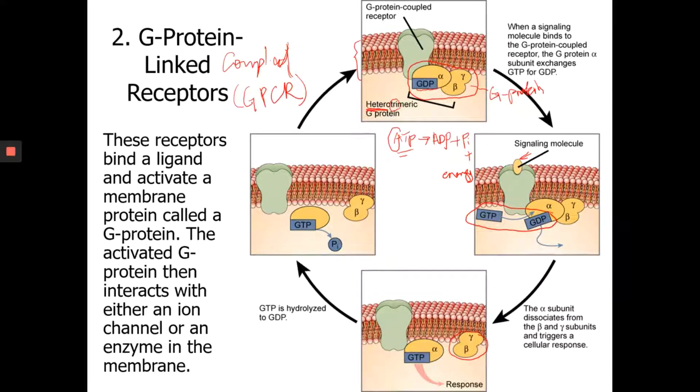Now, these associated subunits can activate other parts, other components in the transduction pathway. So it could be, and I'm just going to draw here, it could be an ion channel or it could be an enzyme in the pathway.